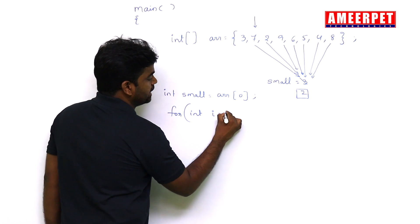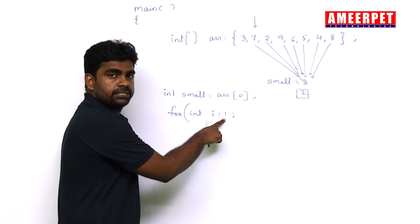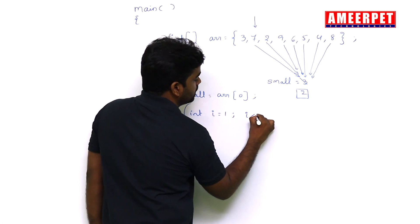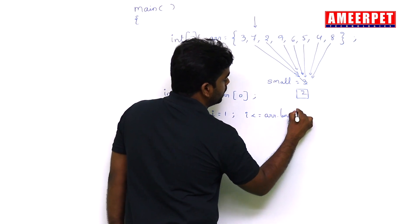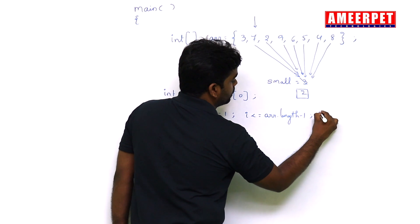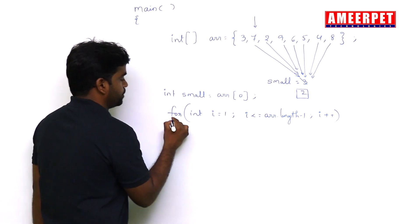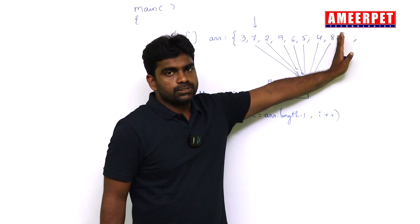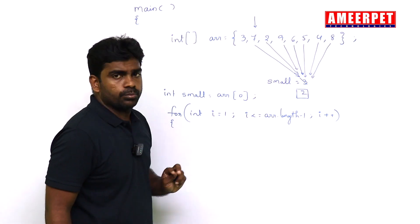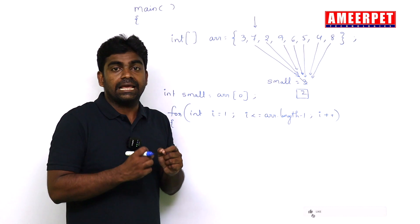Index starting from first location: i is less than or equal to arr.length minus 1, i++. Starting from first location to last location, we are repeating the loop. What are we doing inside?